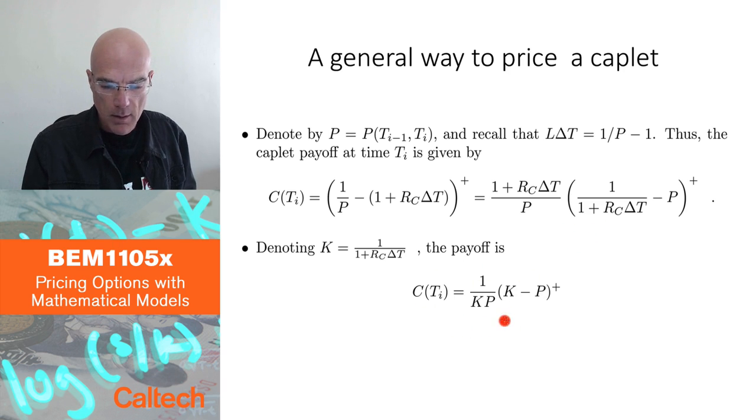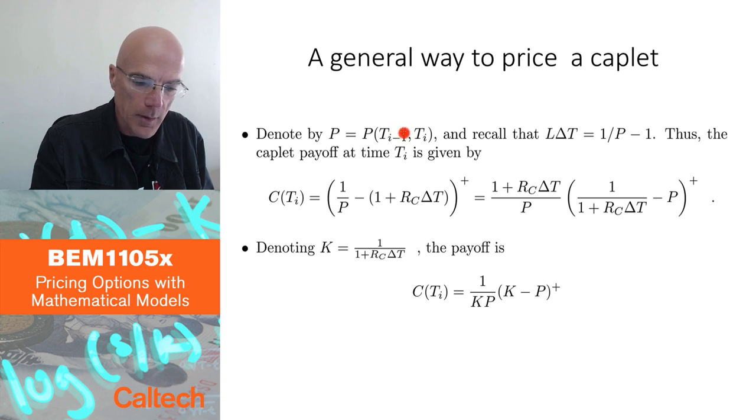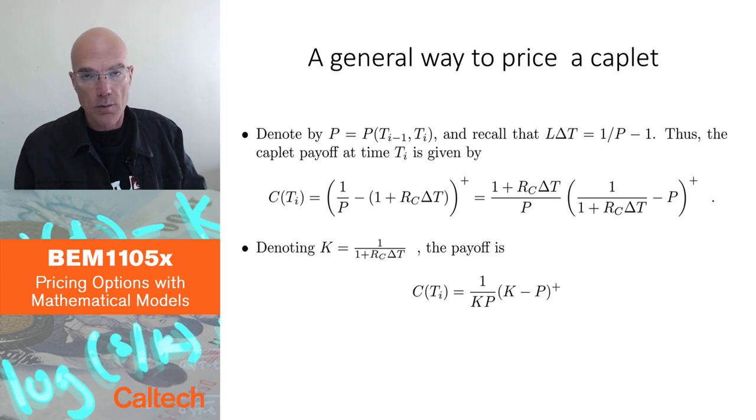I write the payoff as 1 over this constant K times P times K minus P positive part. Well, there is something special about this payment. This is a payment which is paid at time Ti. However, it's known at time Ti minus 1 because P is the bond price at time Ti minus 1. And so we haven't really looked at a case like this before. It's a payment which is paid at Ti, but it's known already one period before at Ti minus 1. I can use that fact to actually compute or at least represent the price of this in terms of put options.